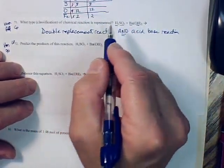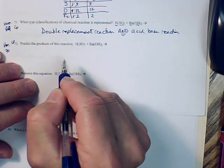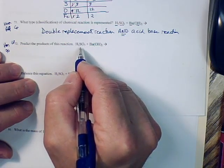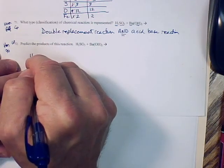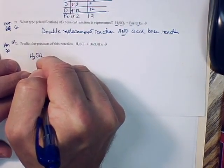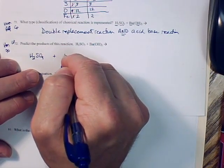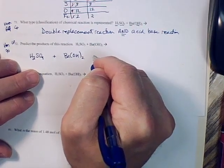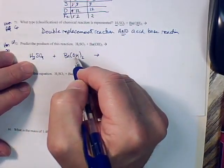So this is a double replacement reaction. The front part of the front chemical goes with the back part of the second, and the front part of the back chemical goes with the back part of the second. Let's rewrite this down here. H2SO3, we're going to figure out its physical state here in a minute, so I'm going to leave a little space. Then barium hydroxide, leave a little space.